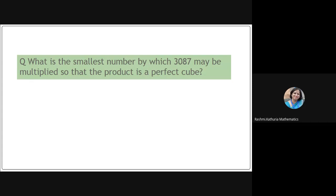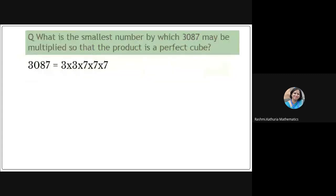chapter Squares and Square Roots, we have learned the method of prime factorization. So can you find the prime factors of 3087? Yes, 3087 can be expressed as 3 × 3 ×